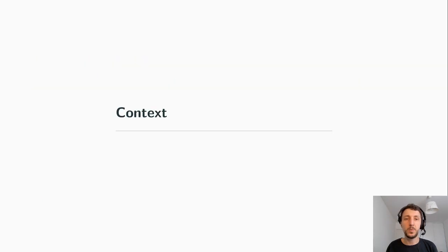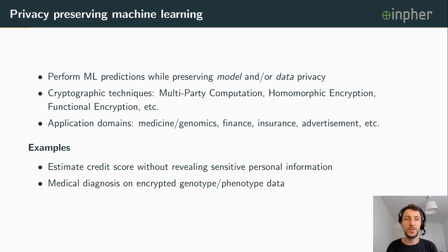Let me start with some context of this work. We are interested in privacy-preserving machine learning — that is to say, we want to perform machine learning predictions while preserving model and data privacy. Different cryptographic techniques can be employed for this task, amongst them multi-party computation, homomorphic encryption, or functional encryption, which we use in this work. The application domains for these techniques are huge, starting from medicine, finance, insurance, advertisements, etc.